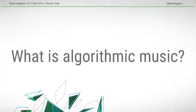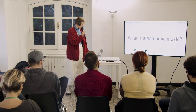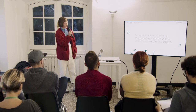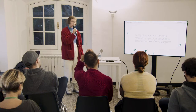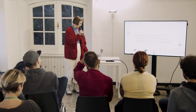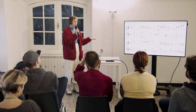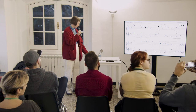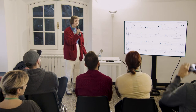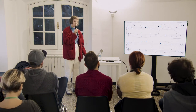So what exactly is algorithmic music? The definition of an algorithm is a set of rules or a sequence of operations designed to accomplish a task or solve a problem. Using this definition, sheet music or using music notation to create music could actually be considered an algorithmic approach. But when we talk about algorithmic music, we usually talk about music created with non-human inputs.